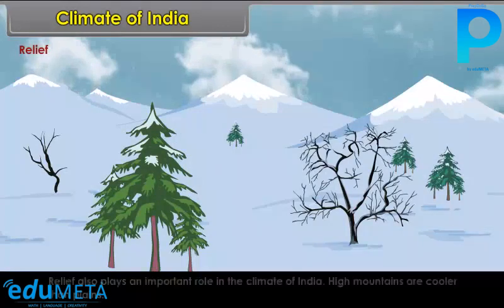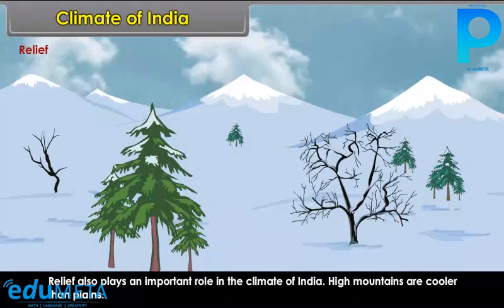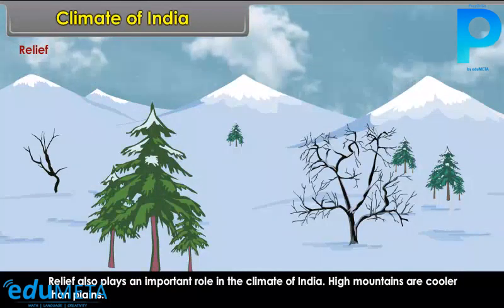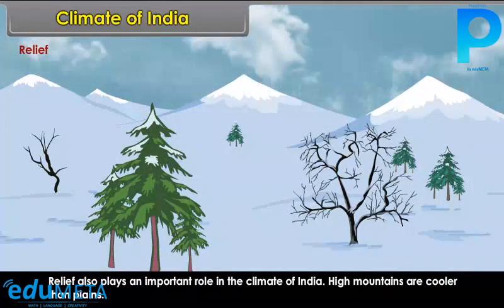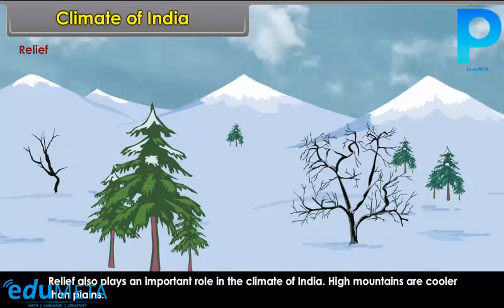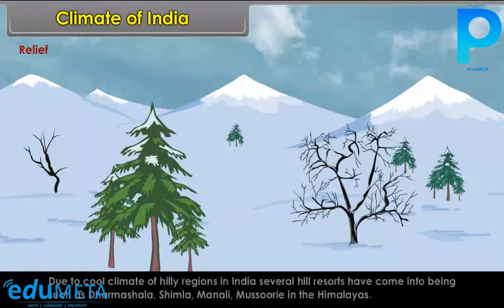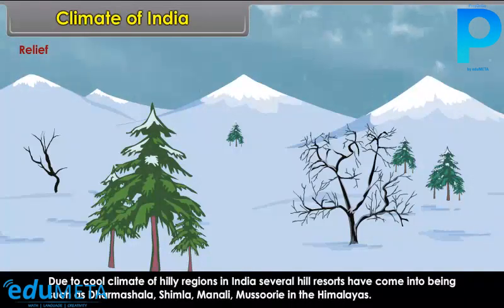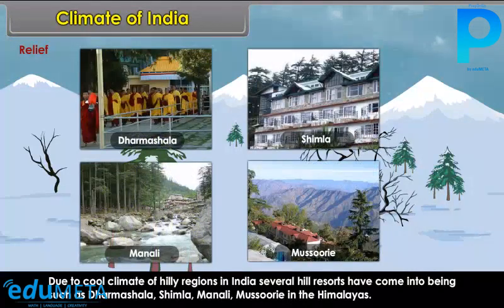Relief also plays an important role in the climate of India. High mountains are cooler than plains. Due to the cool climate of hilly regions, several hill resorts have come into being, such as Dharamshala, Shimla, Manali, and Mussoorie in the Himalayas.